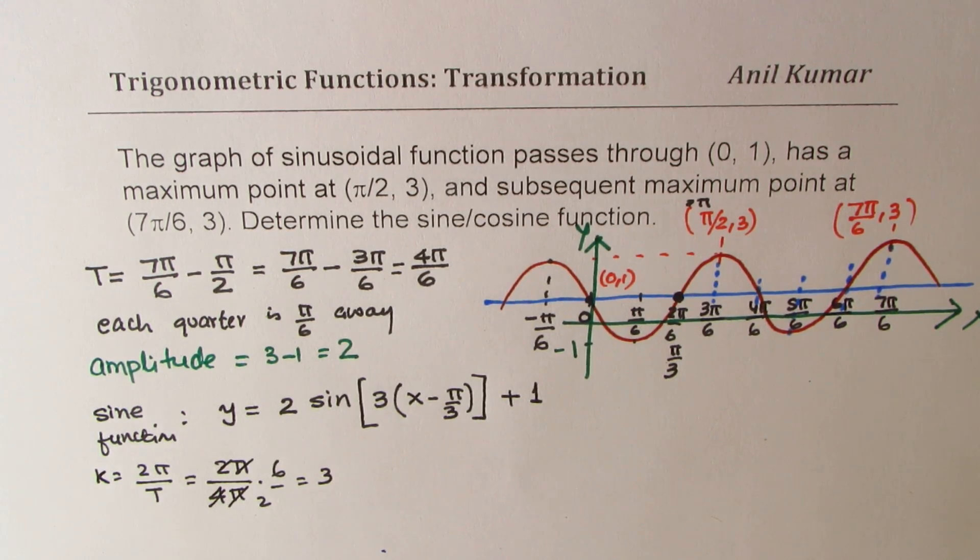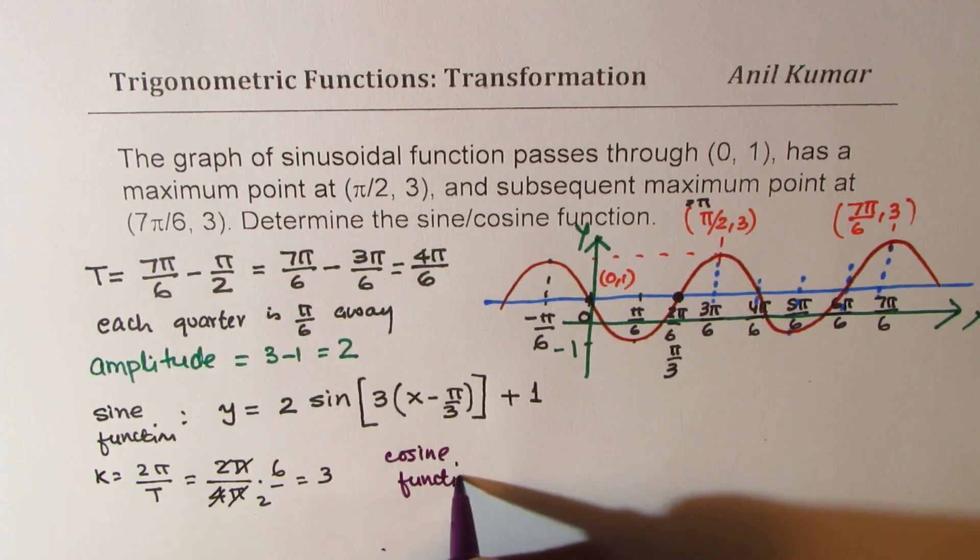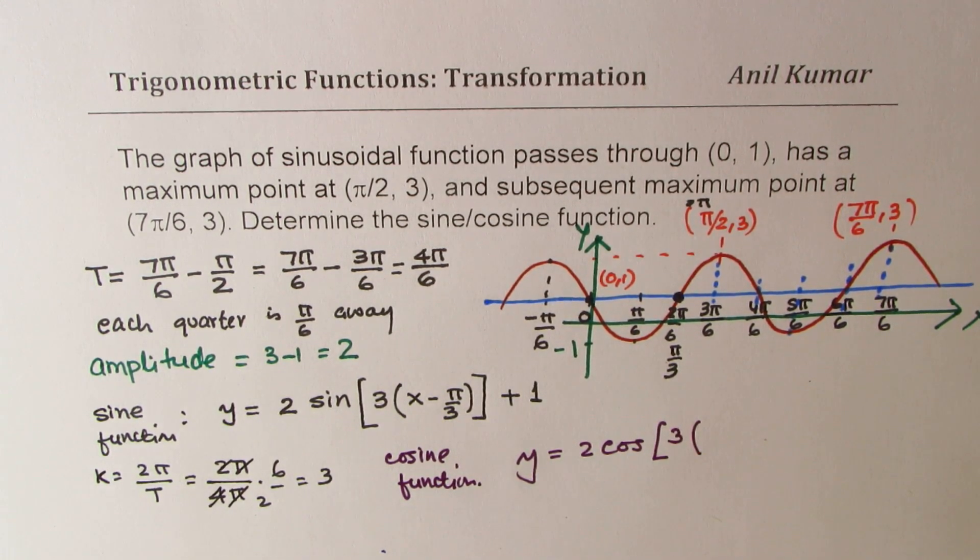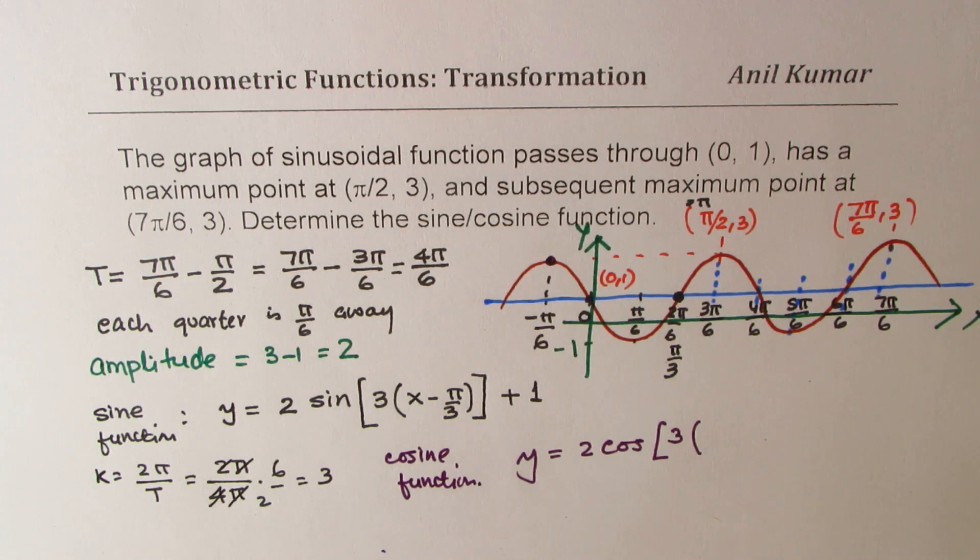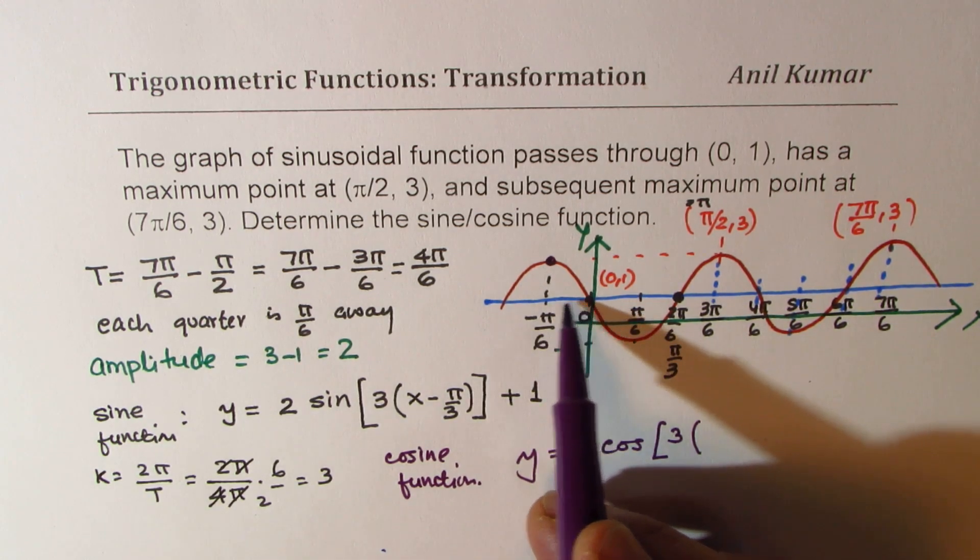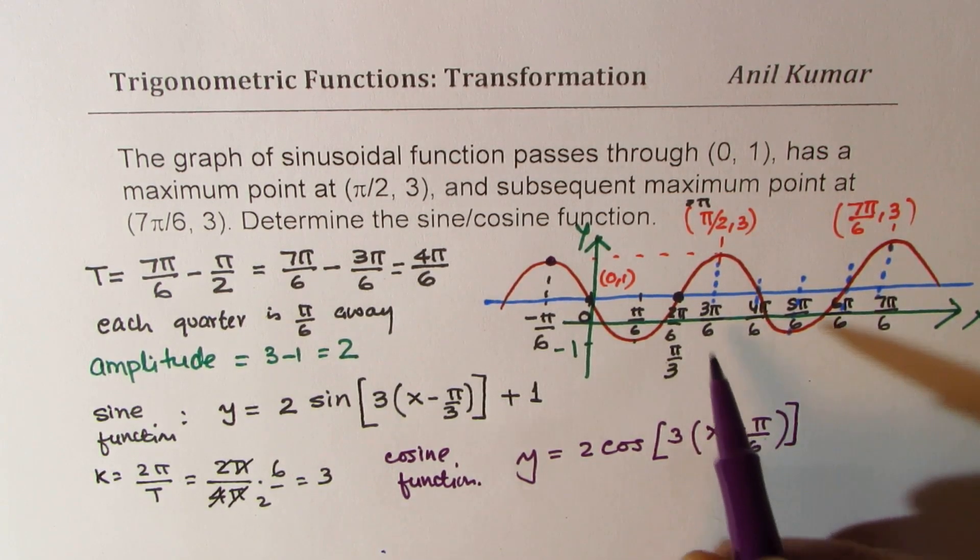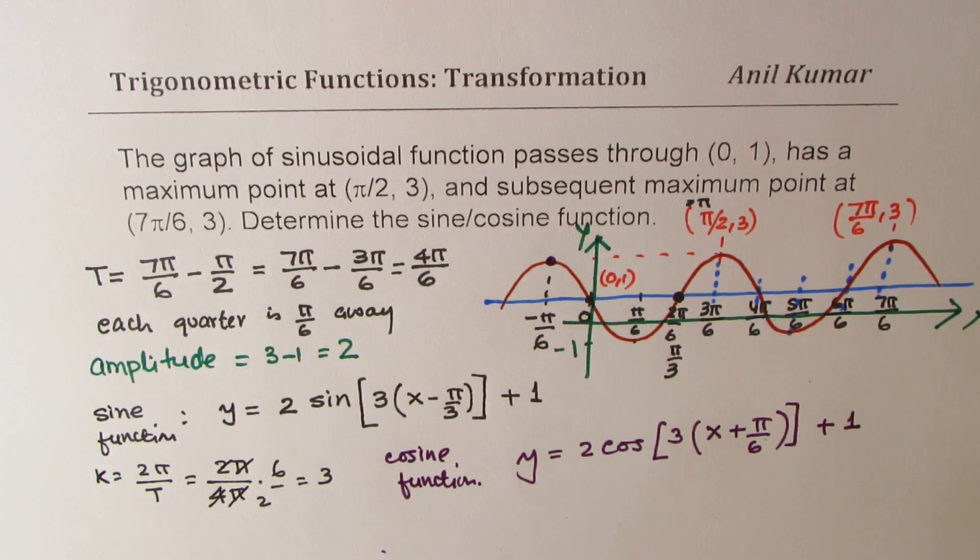Now once you know all these parameters, you can actually write the cosine function also. So I like you to pause the video, write down the cosine function, and then check with my solution. Cosine function will be y equals to 2 cos of, only thing which changes is phase shift. For a cos function, it starts with maximum. So in this case, that could be treated as the starting point for the cos function, which is π/6 to the left. So we could write this as x plus π/6. And axis has been shifted one unit up.